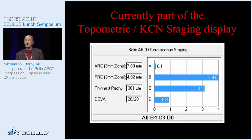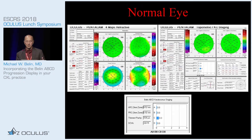It's in radius of curvature, not diopters, because if you're looking at the posterior surface, radius of curvature is a much more intuitive measurement — the posterior cornea is a low-power minus lens. This is a normal eye. You can see a form map on the left, the topometric keratoconus staging on the right, and a blowup of the ABCD staging below.